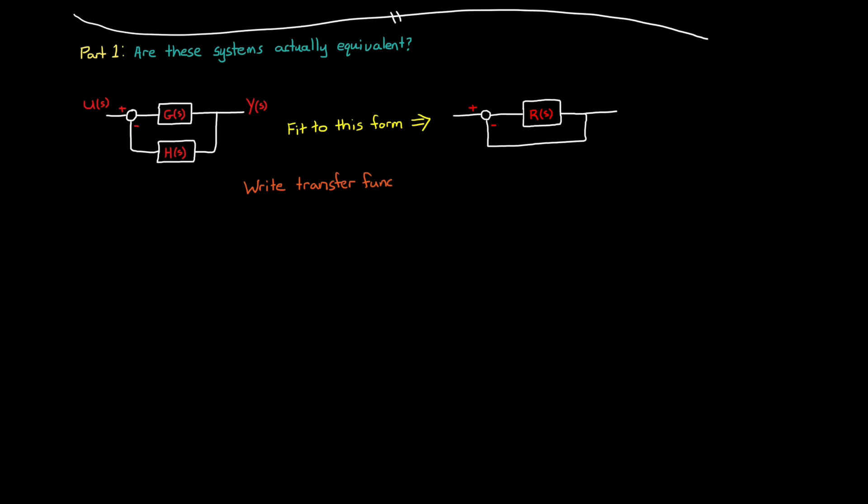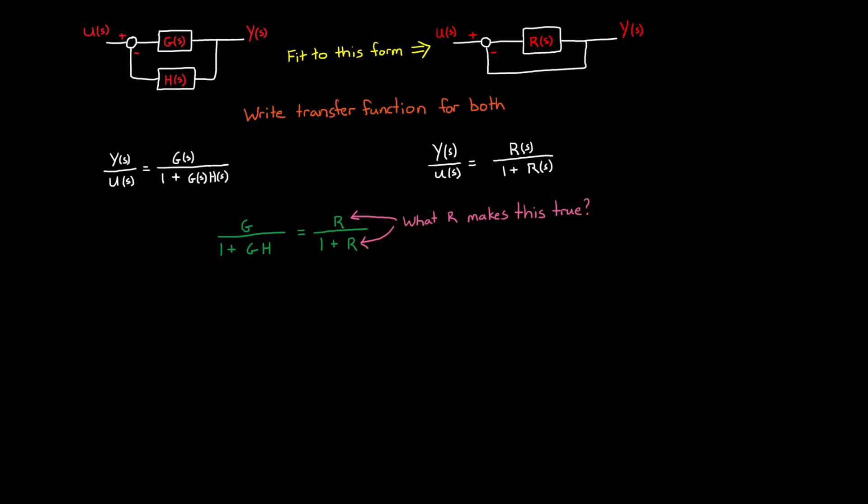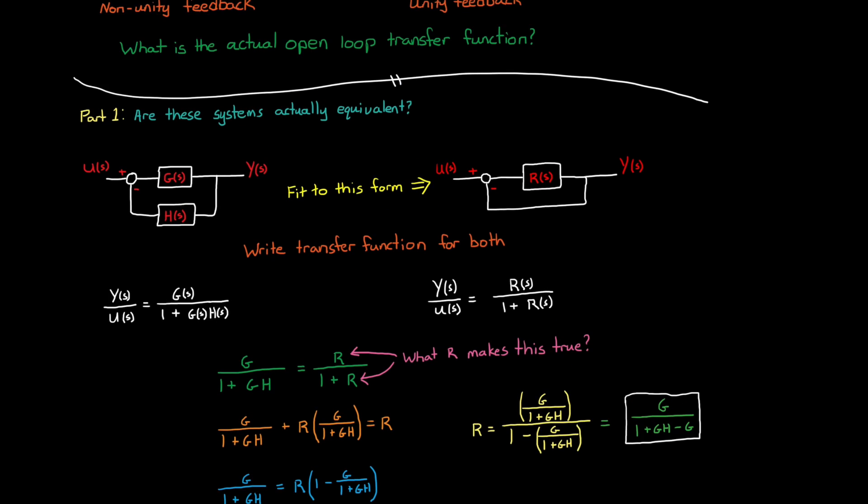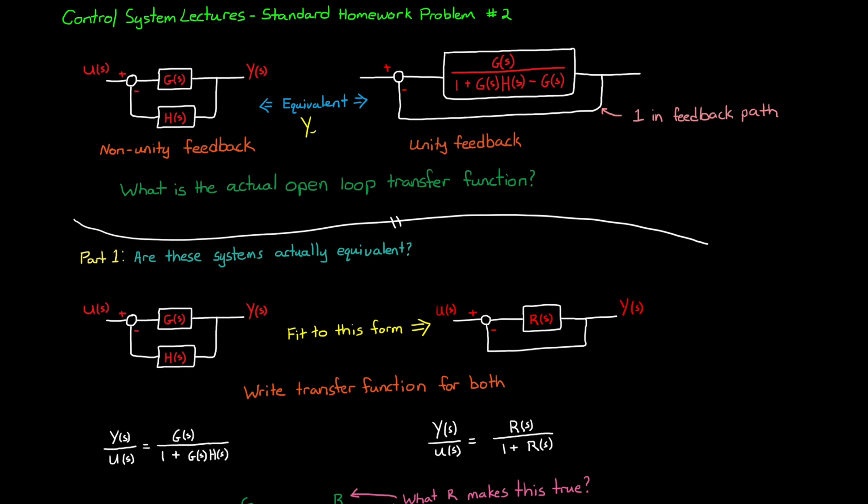From here we can write out the closed-loop transfer functions for both systems. The system on the left has transfer function G over 1 plus GH. And the system on the right has transfer function R over 1 plus R. Now, how do we make sure that those two closed-loop transfer functions are equivalent? We just set them equal to each other. Now we can answer the question, what is the value of R that makes this equation true? We can do a little basic algebraic equation manipulation to solve for it. We multiply both sides by 1 plus R and distribute. Then we collect the terms with R in them on the right side and factor out R. Finally divide everything that R is multiplied by to get R equals G over 1 plus GH minus G. Which is exactly what the problem stated in the first place. So these two closed-loop systems are in fact equivalent.